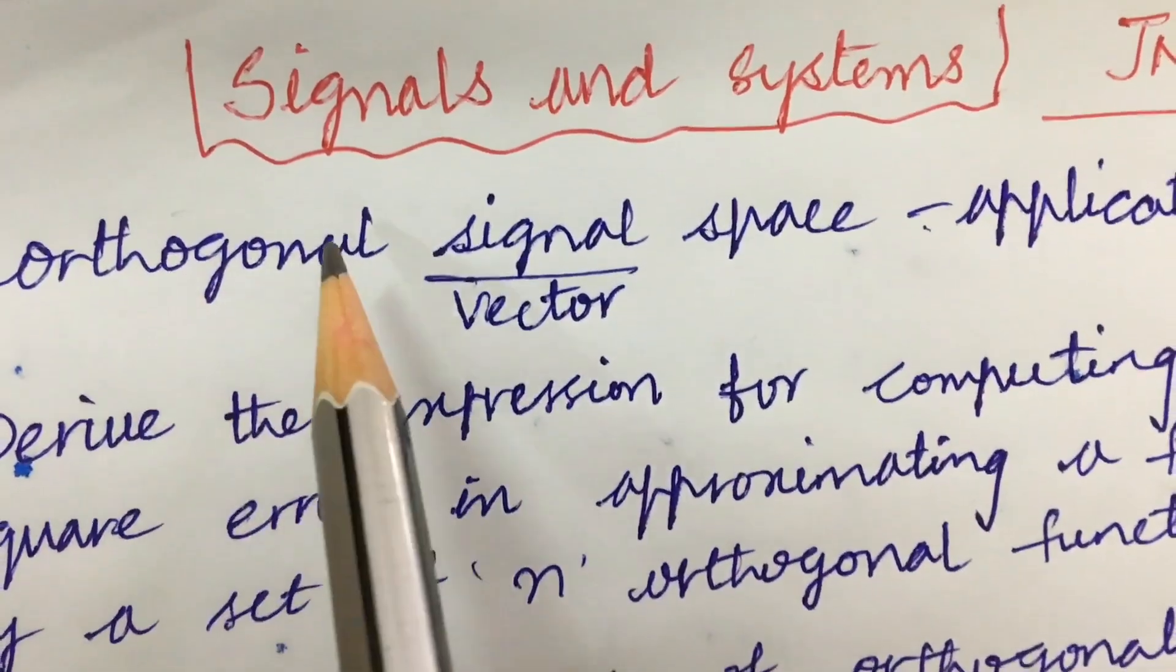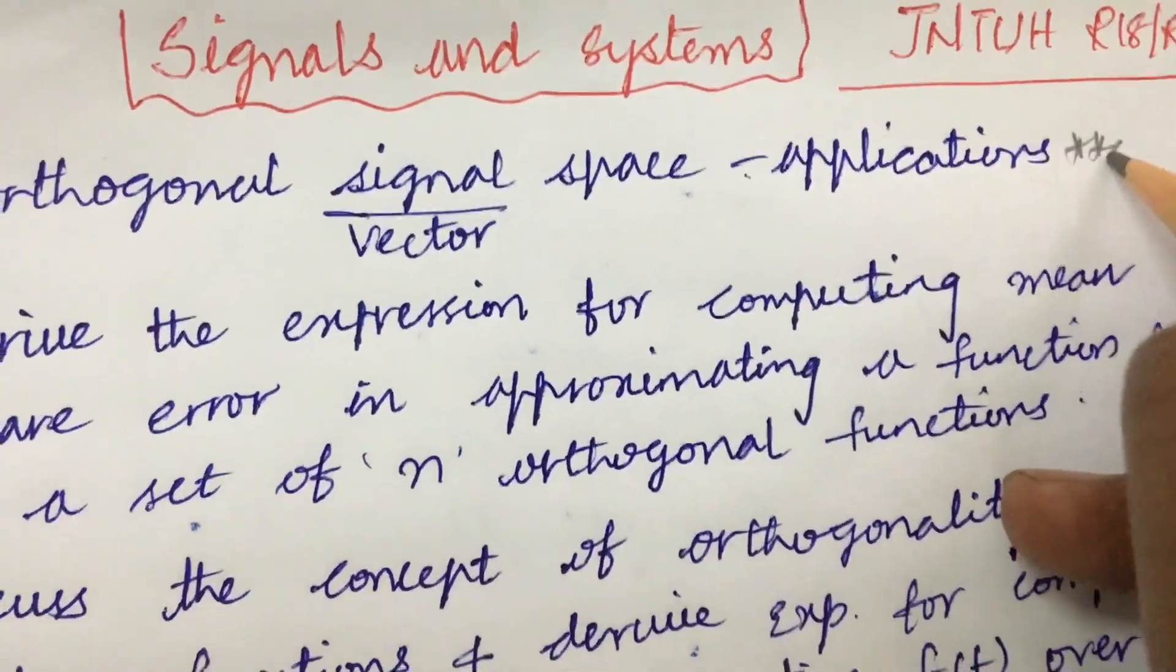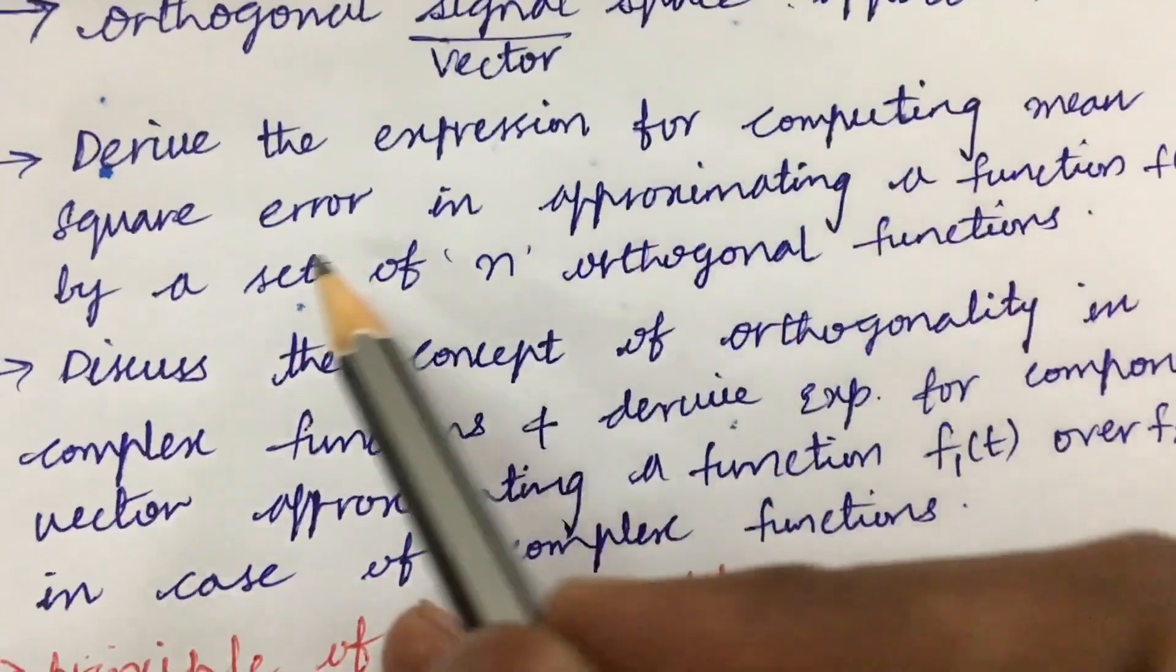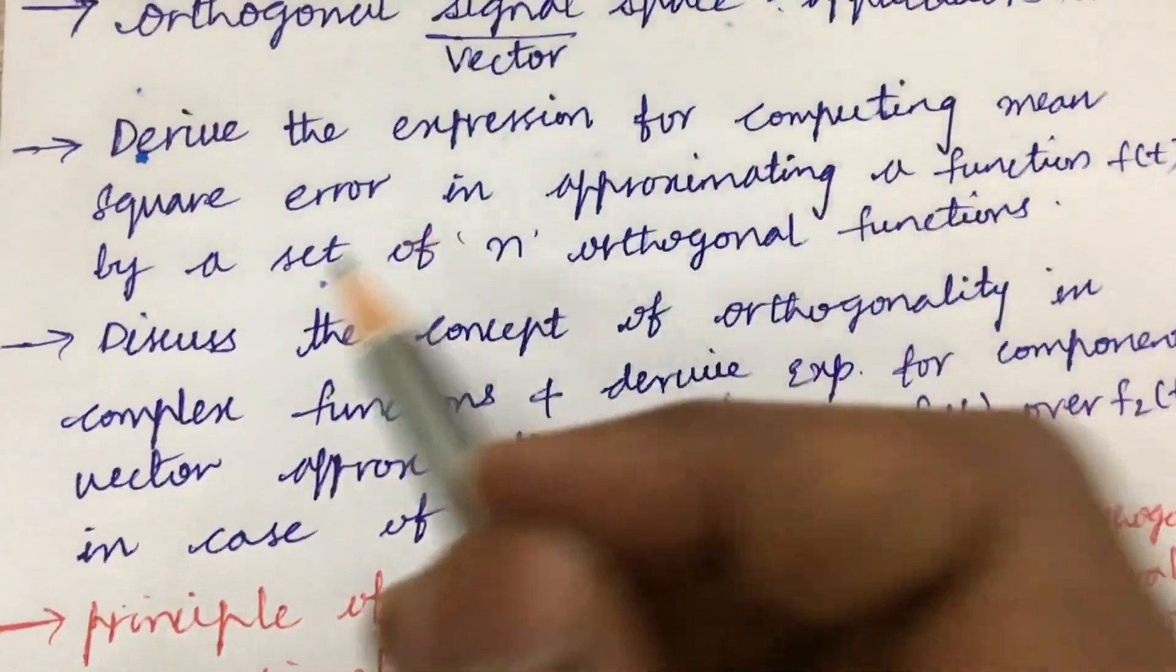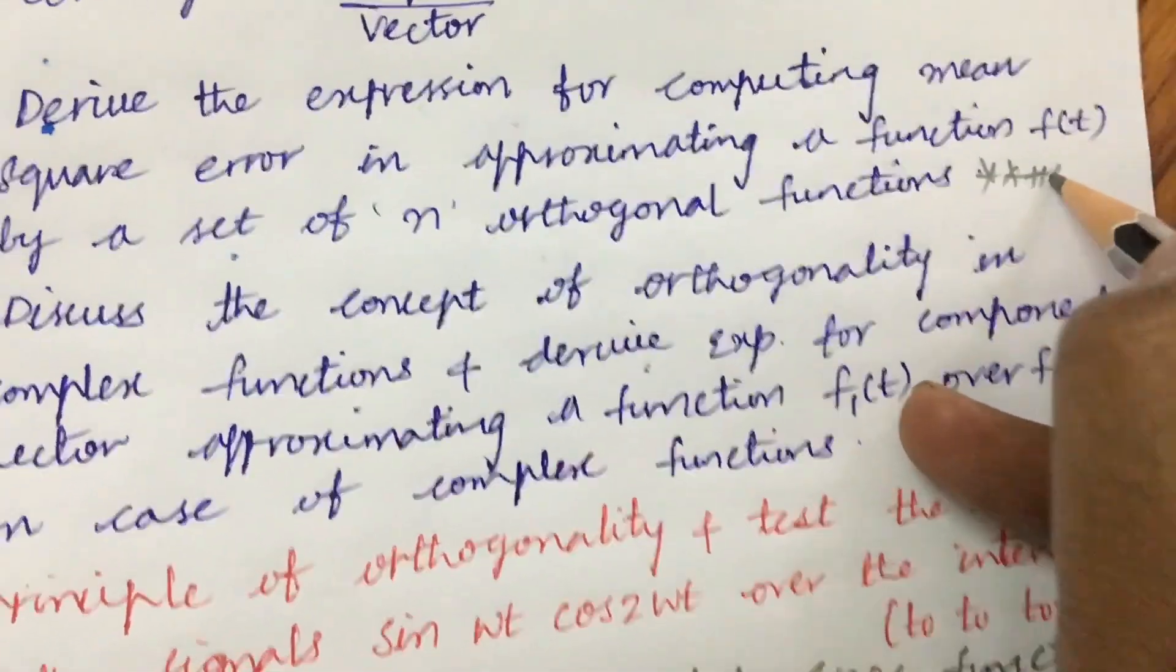The first and foremost is the orthogonal signal space as well as the vector space and the applications may be a 7 mark question. Later derive the expression for computing mean square error in approximating a function f(t) by a set of n orthogonal functions is one of the gunshot question dear students.